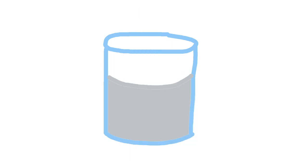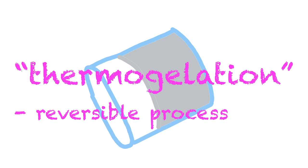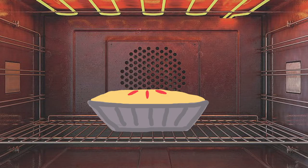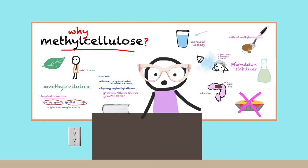Methyl cellulose is also special because it forms a gel when heated, becoming more solid, but changes back as the temperature goes back down. This reversible process is called thermal gelation. This is useful in pastries because it can help keep the liquid inside from boiling out, since the filling will become thicker and hold its shape better as the pastry is heated.